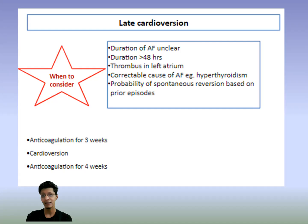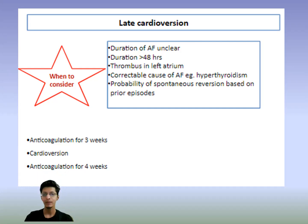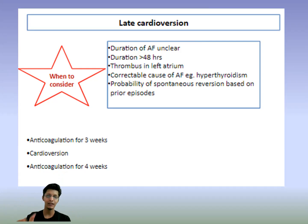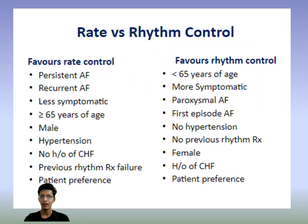Look for a correctable cause such as hyperthyroidism. For such patients, first give anticoagulation for three weeks before cardioversion, then give anticoagulation for the next four weeks after cardioversion. Remember: three weeks of anticoagulation before cardioversion, then four weeks of anticoagulation after cardioversion.